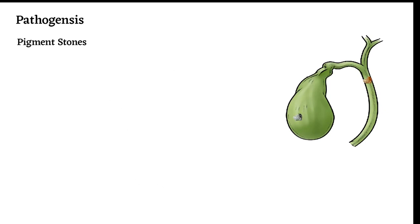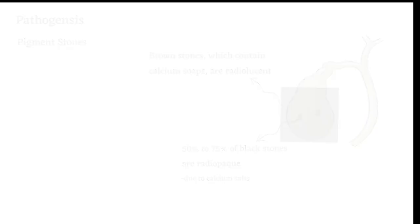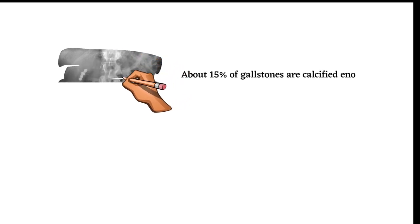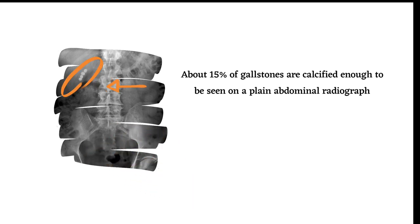Pigment gallstones are brown to black. In general, black pigment gallstones are found in sterile gallbladders and brown stones are found in infected large bile ducts. Approximately 50 to 75 percent of black stones are radiopaque due to calcium salts, while brown stones, which contain calcium soaps, are radiolucent. About 15 percent of gallstones are calcified enough to be seen on plain abdominal radiograph, and of these, two-thirds are pigment stones.